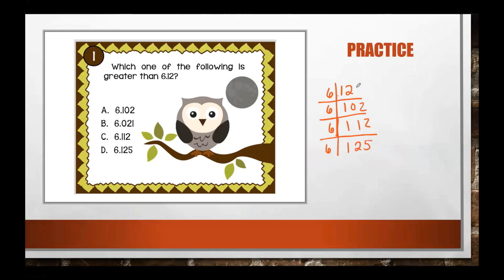Starting from the left and moving right, I'll put a zero placeholder so I can see three digits in each number. All the whole number parts are sixes, so they're all equal there. I'll put a star on the number I'm comparing against. Moving to the right, in the tenths place I have one, one, one, and one — they're all the same, so I need to move further right.